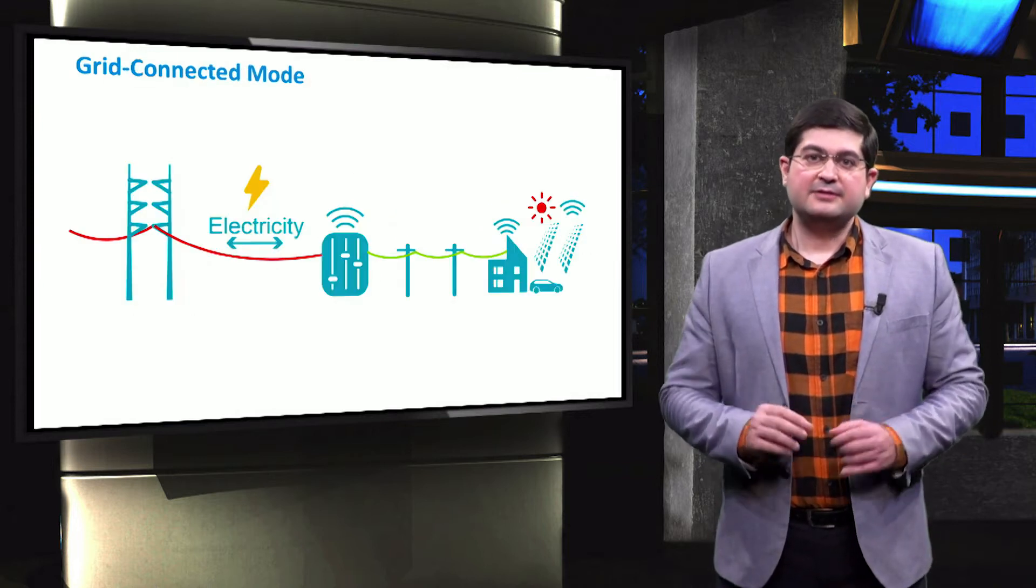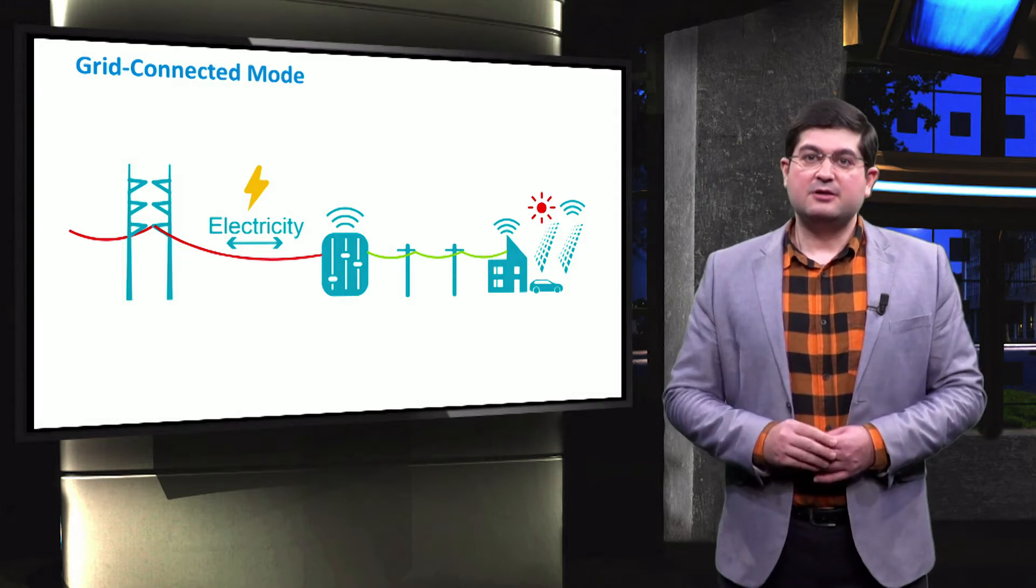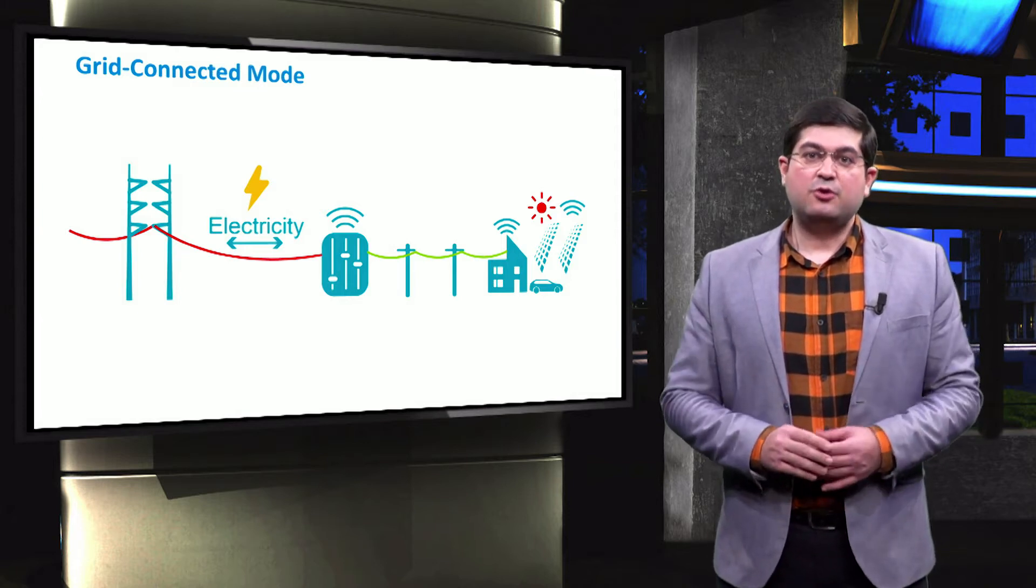If the microgrid is connected to an external grid, then the operation of the microgrid is largely affected by the quality of the grid.